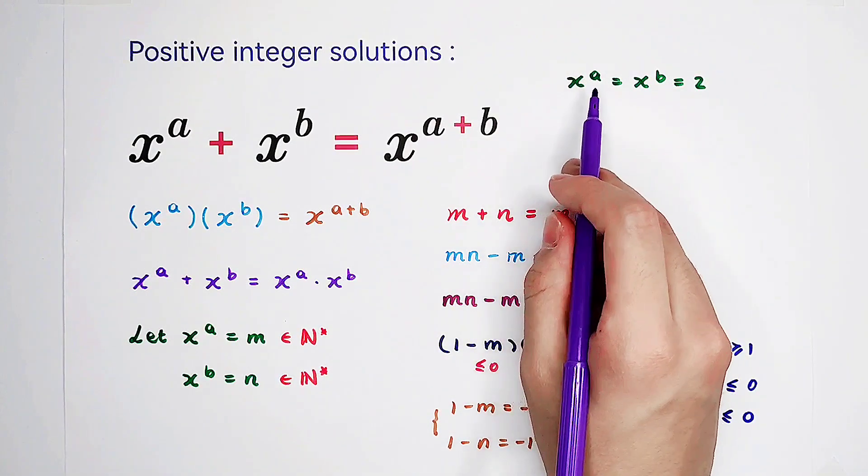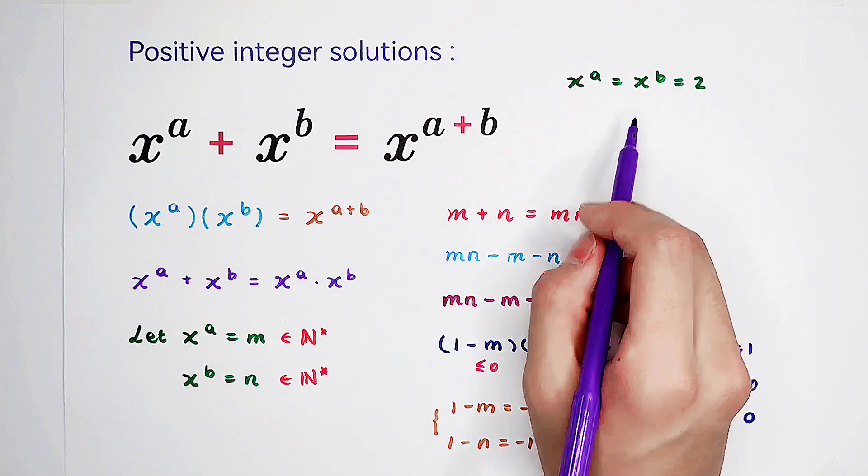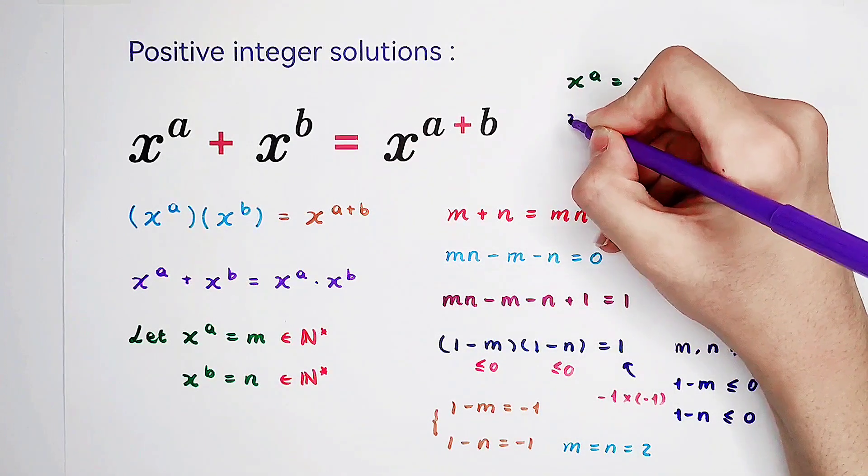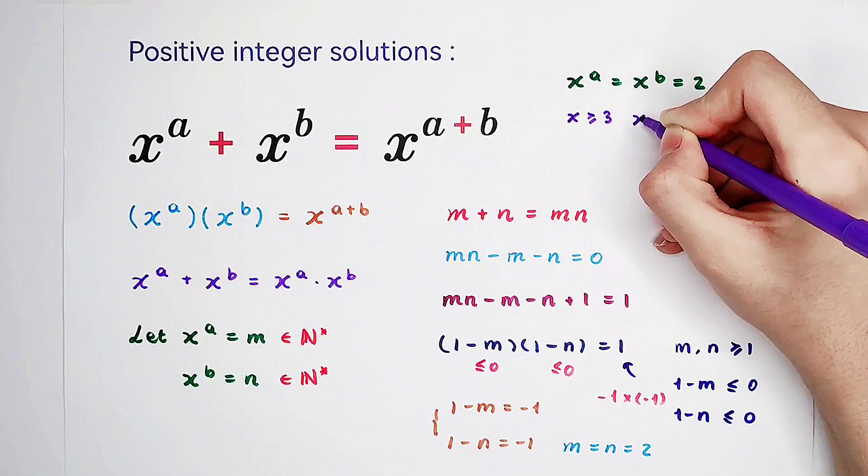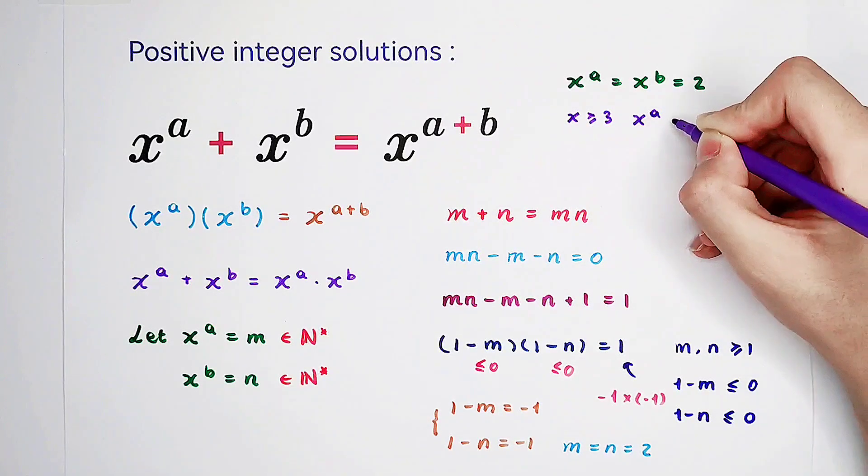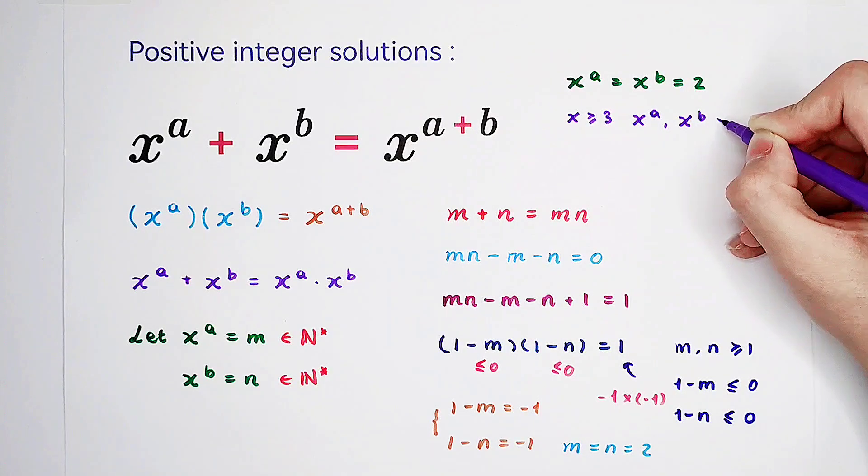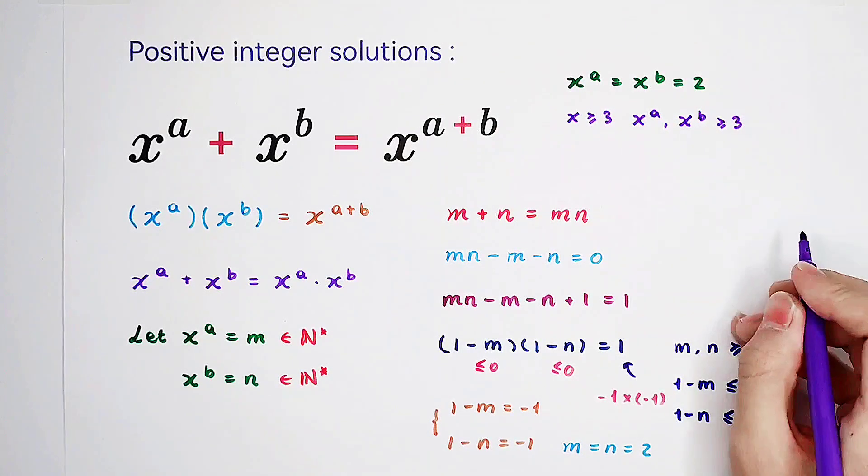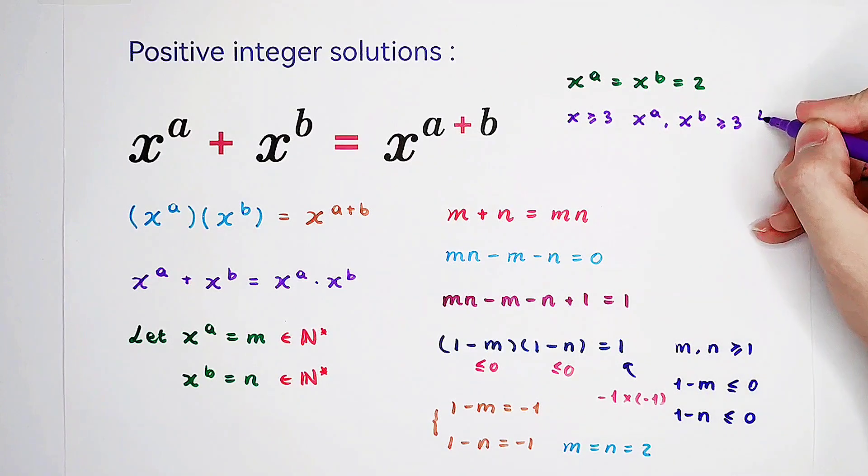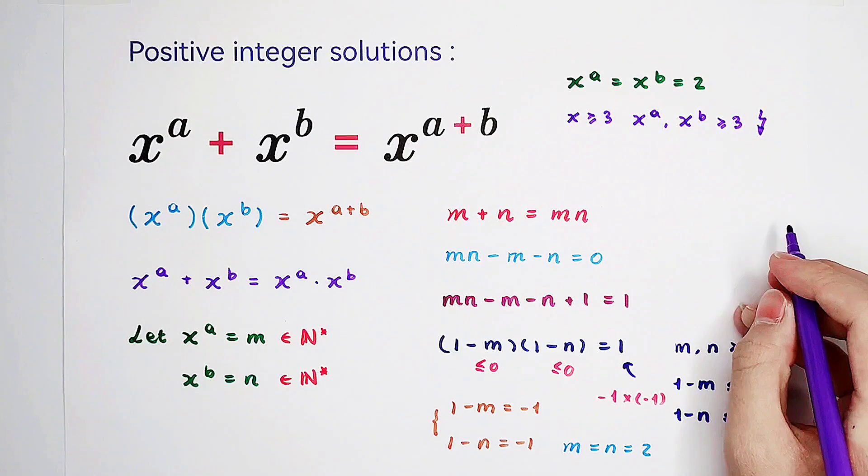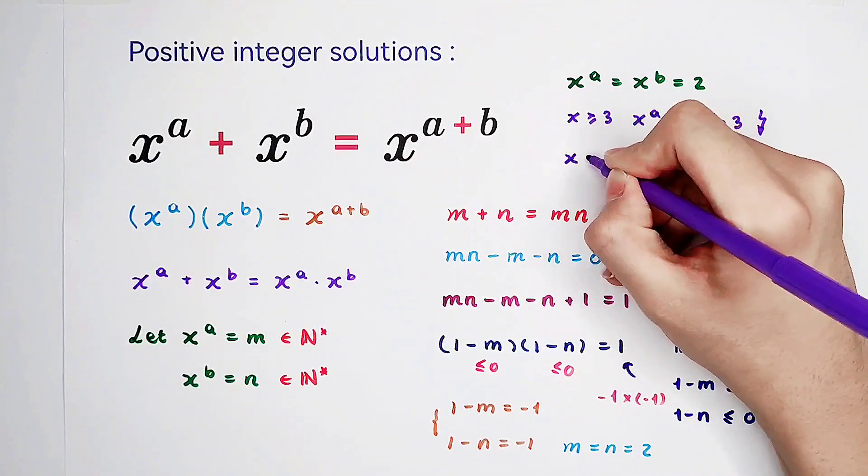x is a positive integer, a and b as well. Now, if x is greater than or equal to 3, then x to the power of a and x to the power of b are of course greater than or equal to 3. So it cannot be true. Contradiction. So that means x should be 1 or 2.